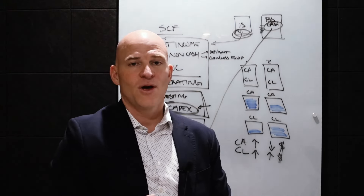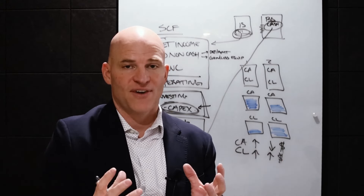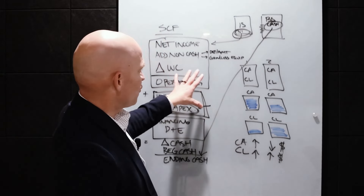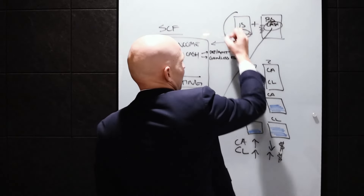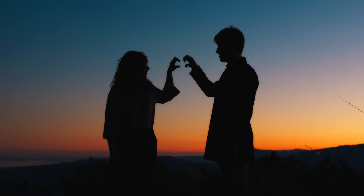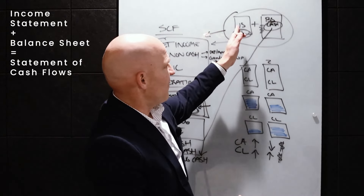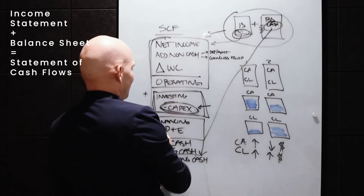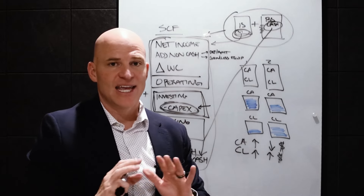I have a whole other video on how to read financial statements if you want to see how these three statements come together. But just to show you here: think of the income statement and the balance sheet falling in love and having a baby — that baby is the statement of cash flows, because it's a combination of items off the income statement plus items off the balance sheet. This is the most important financial statement in any business because it tells you where cash is flowing.